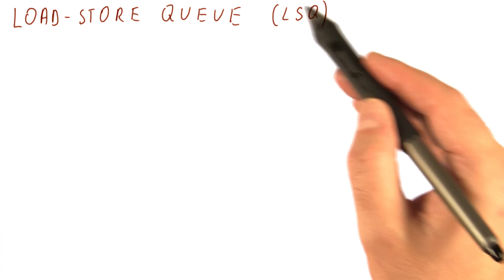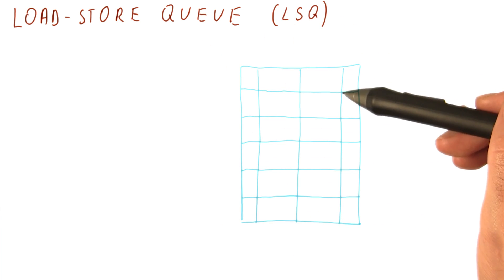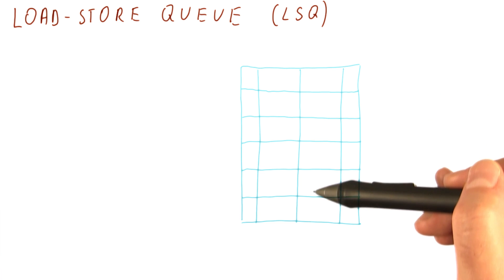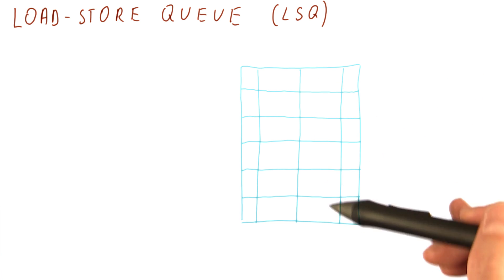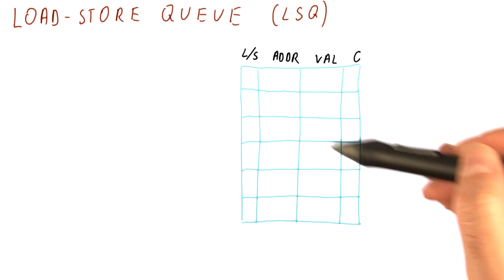This load store queue, or LSQ, is a structure just like the ROB, meaning we put things there in order and remove them at commit. But we only put load and store instructions there.